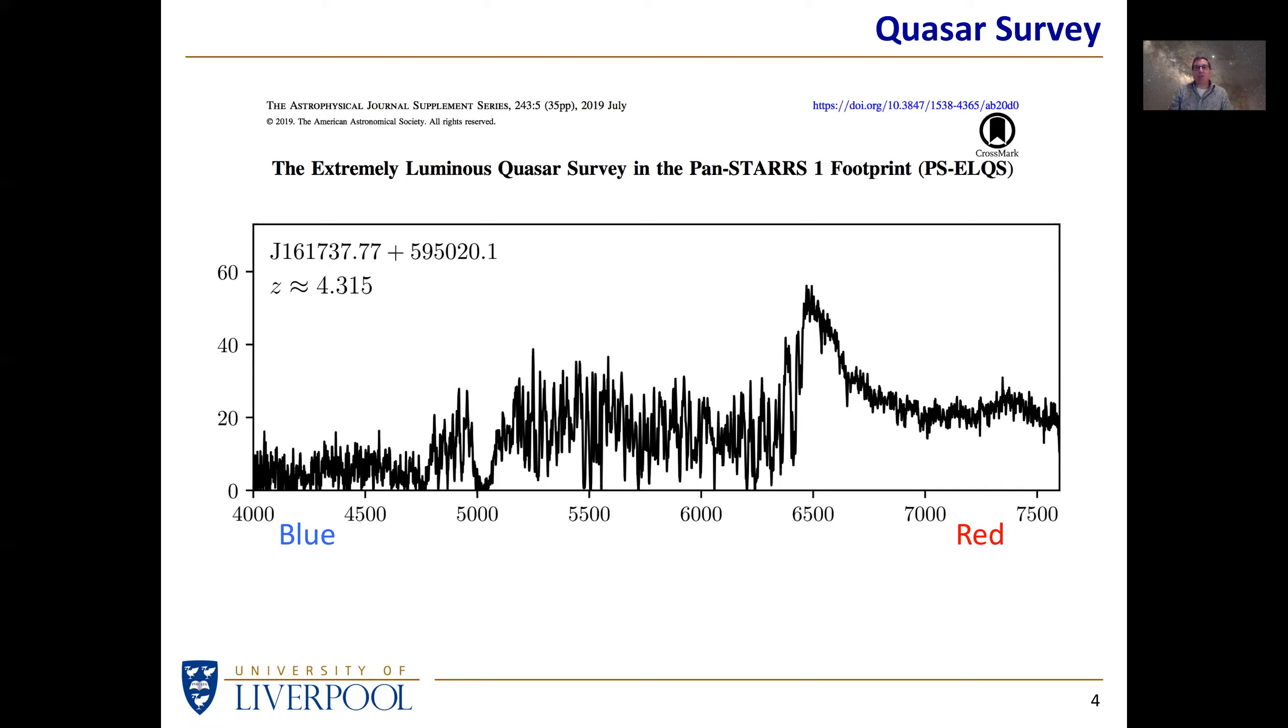So this particular quasar, they have taken this spectrum. This is the intensity of light vertically as a function of the horizontal axis which is the wavelength in angstroms. One angstrom is one tenth of a nanometer. The blue end of the spectrum is on the left and the red end is on the right.